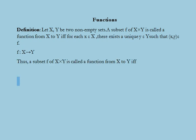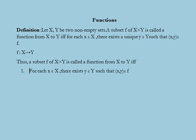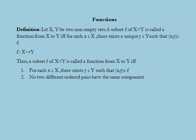A subset f of x into y is called a function from x to y if and only if two conditions are satisfied. First, for each x belonging to x there exists y belonging to y such that (x, y) belongs to f, and no two different ordered pairs have the same first component. In other words, a function from x to y is a rule which associates to each element x of x a unique element y of y.